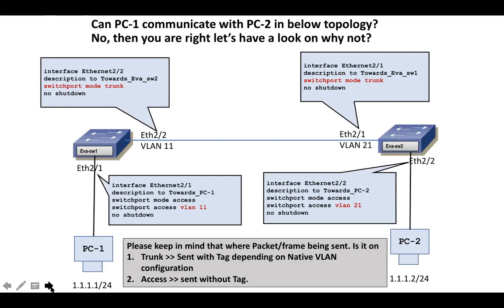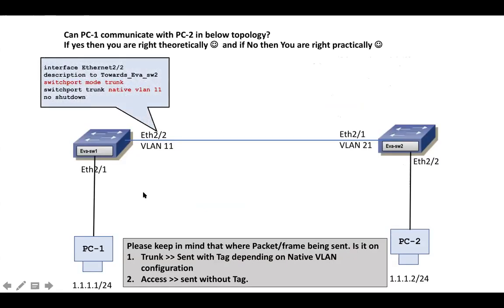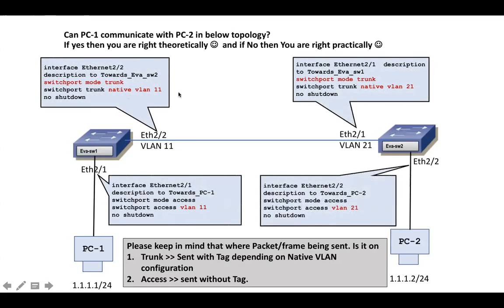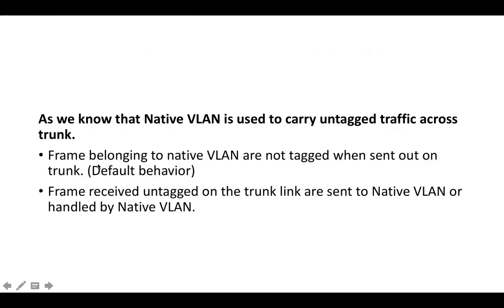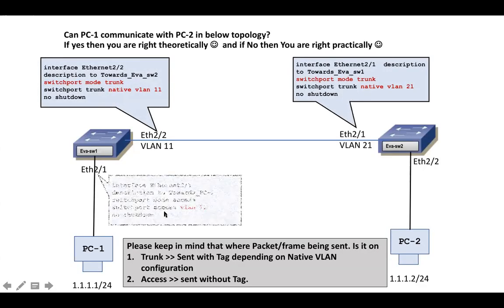In the same topology, another change has been made — native VLAN is now configured. As we know, native VLAN is used to handle untagged traffic and does two things: frames belonging to the native VLAN will be sent untagged, and if an untagged frame is received on a trunk link, it will be handled by the native VLAN.